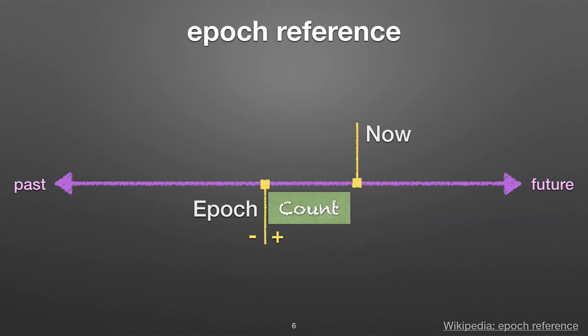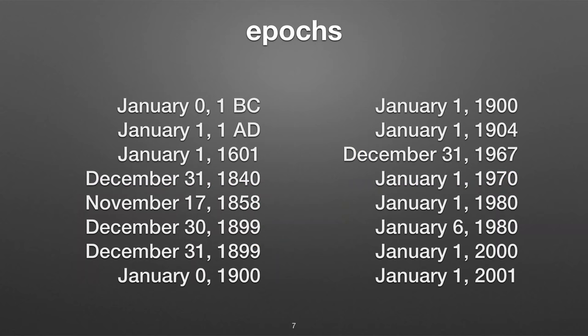How do we define "now"? You have to pick an arbitrary point in time as a reference — we call that the epoch. We pick that point and say negative numbers to the left is an amount of time in the past, and positive numbers to the right are after that point. So the next question is: what epoch are we going to pick? How many people here know which one's the right epoch?